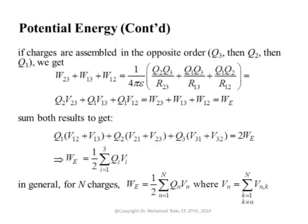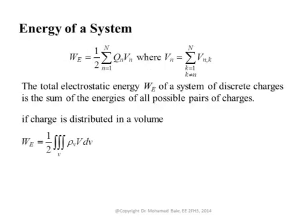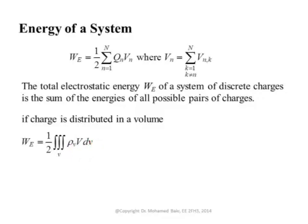This is the final formula we will use. For a continuous charge distribution, the equivalent expression uses ρᵥ·dV instead of discrete charges: the electric energy W equals one-half the integral over the volume of ρᵥ·V·dV, where ρᵥ·dV is dq — the charge at each differential element — and multiplying by V gives dW, the differential work for that element.